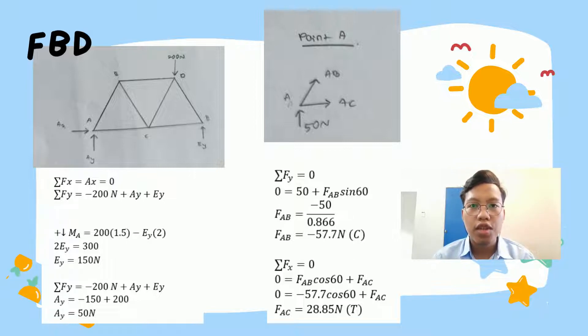Next, we analyze each point. The first point is point A. We have AY which is 50 N. We will have two forces, AB and AC. So from that point, we will use the technique of total force. Total force for Y is zero. Zero equals 50 plus FAB sin 60. Why do we use FAB? Because from AB, we can get the Y value and X value. So we want Y, so we use sin 60. Force AB equals negative 50 divided by 0.866, and we get force AB equals negative 57.7 N compression, because it is negative.